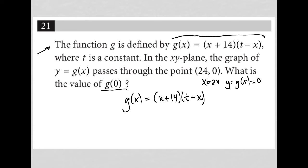I also know that when x is 24, so g(24), I'd get (24 + 14)(t - 24). I know that g(24) is actually equal to 0.